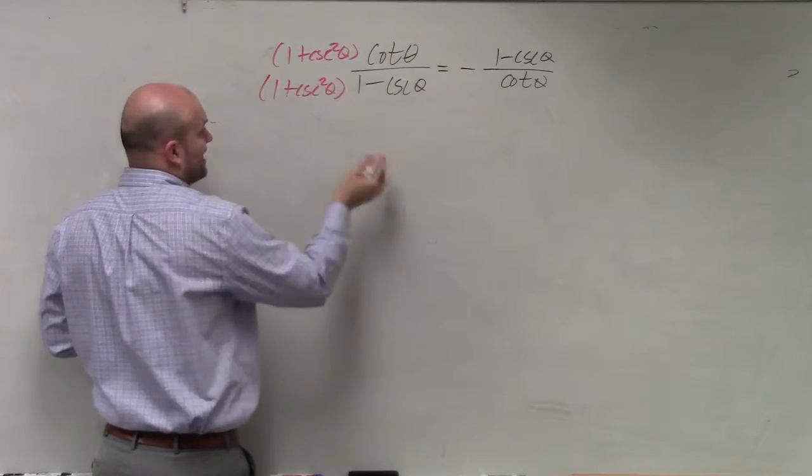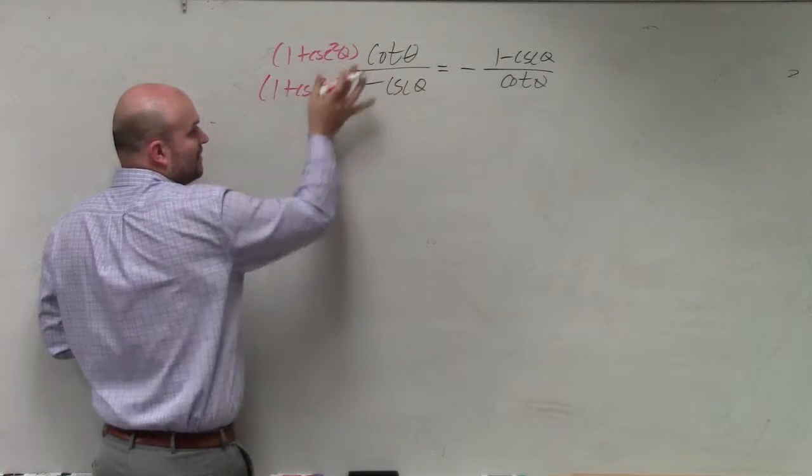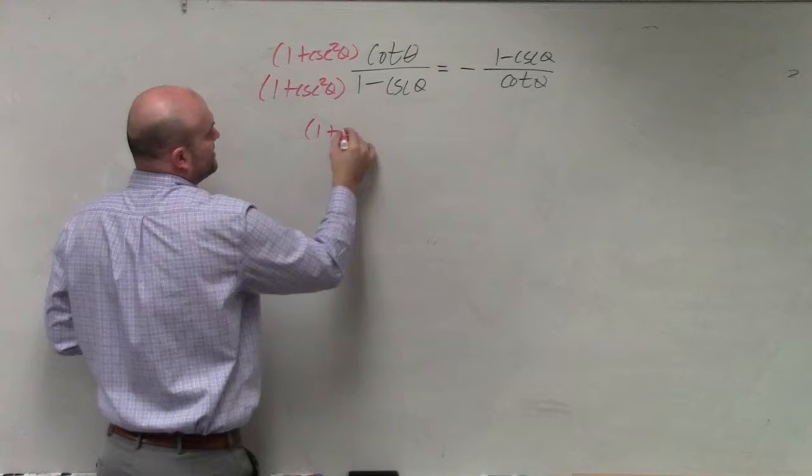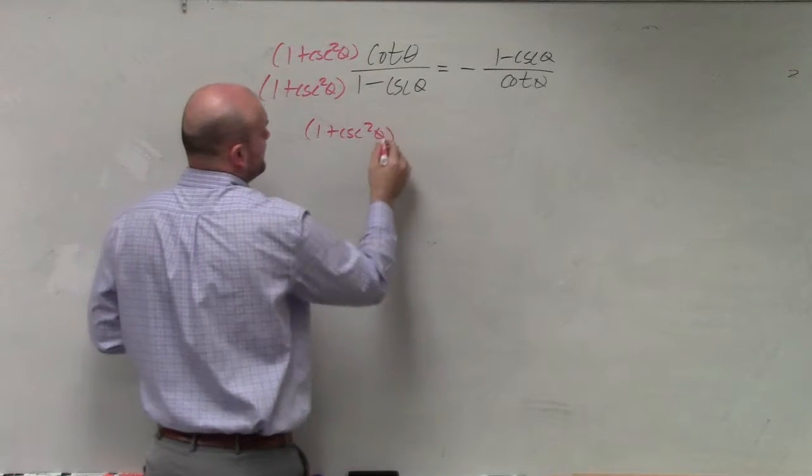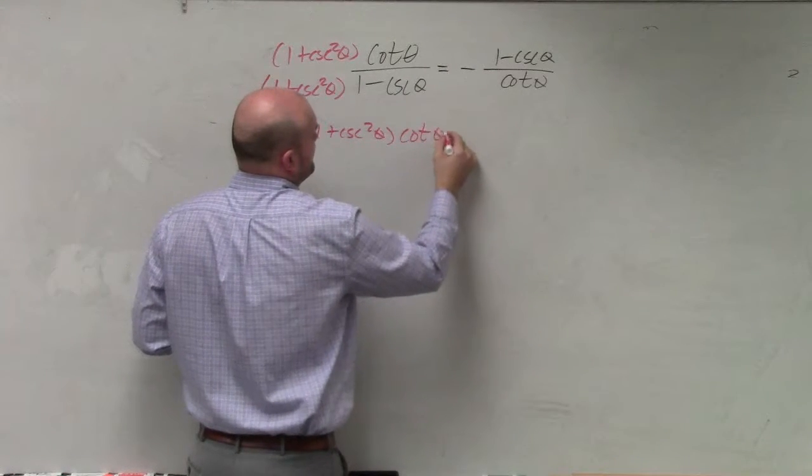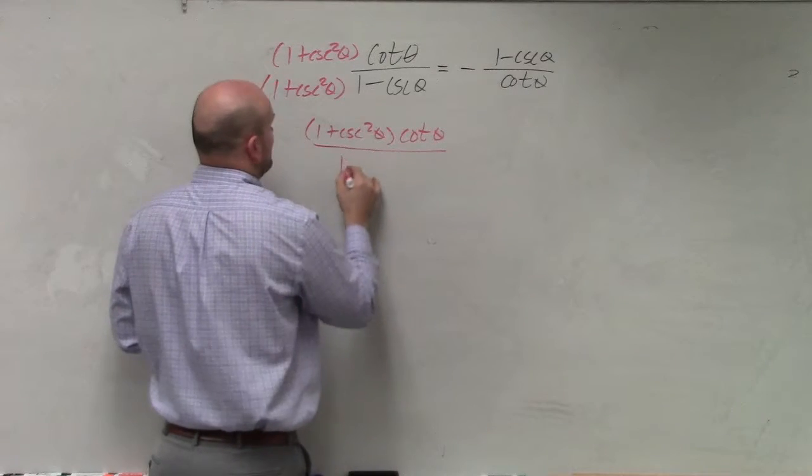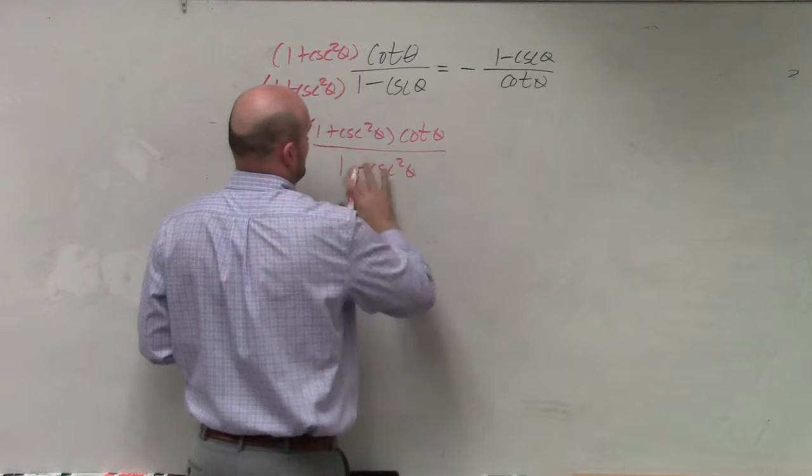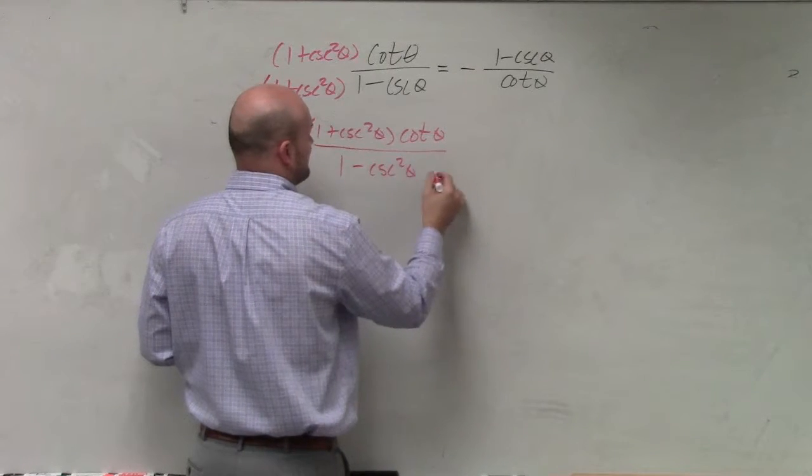So when I multiply that, let's just leave this unmultiplied for a second and then multiply this. So therefore, I'd have one plus cosecant squared of theta times cotangent of theta, all divided by one plus cosecant squared of theta. I'm sorry, one minus cosecant squared of theta.